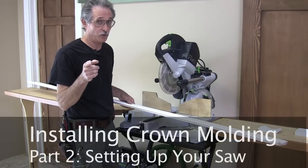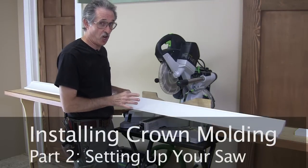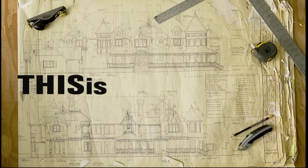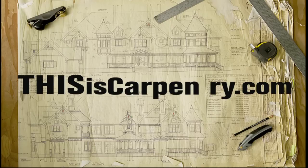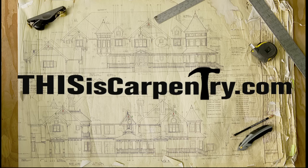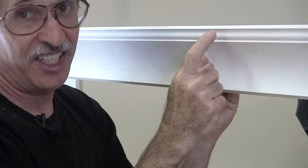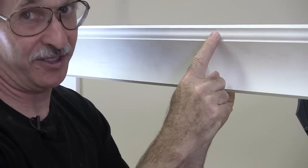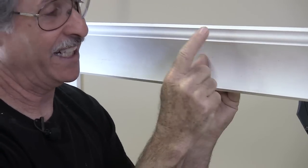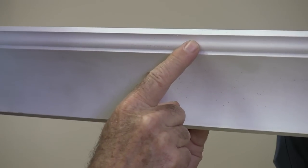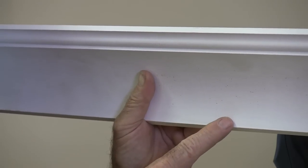The second step in installing crown molding is setting up your saw. Let's do that now. This is Windsor One's classical craftsman crown molding and it has an OG on the top, not the bottom of the crown.